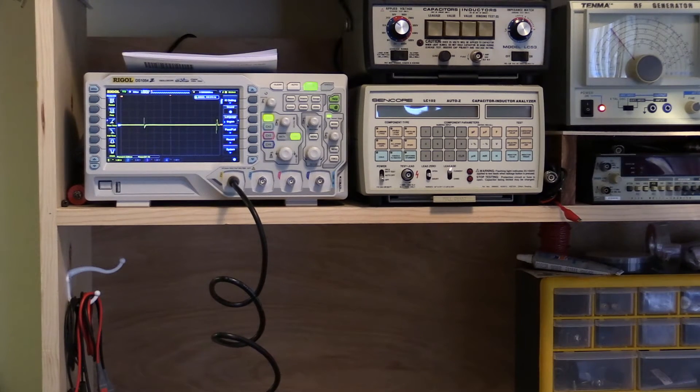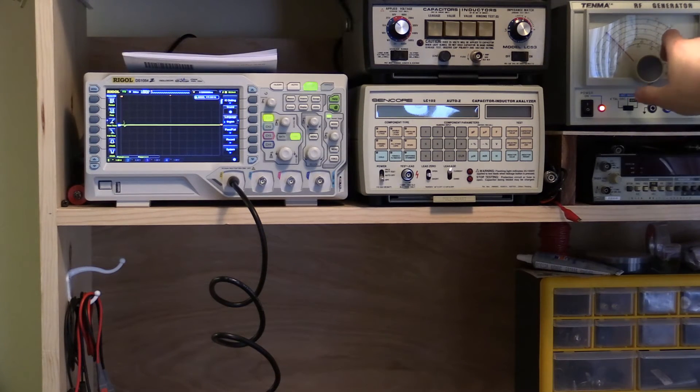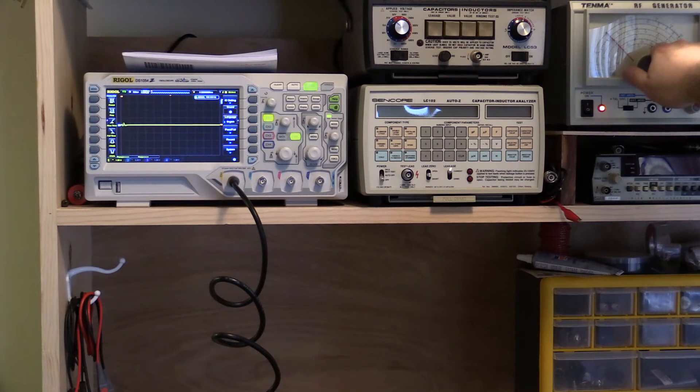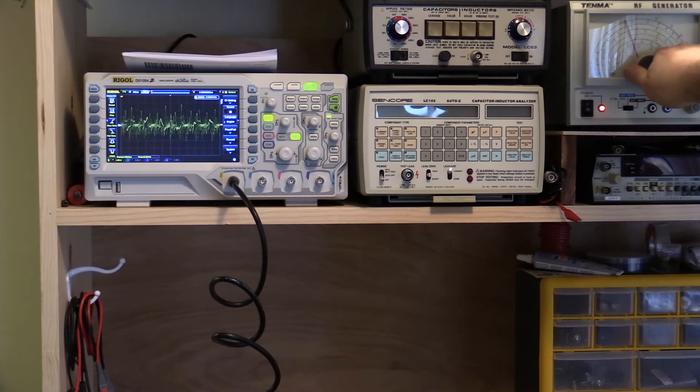I also managed to screw up the setting on this scope and I'm not getting the frequency display so that's why I wanted to plug in the RF generator to make sure that I was getting the right readings. The scale starts at 39 here and I wanted to make sure I'm on and it's pretty much on.